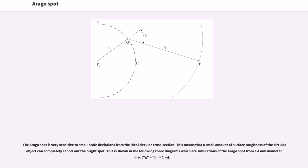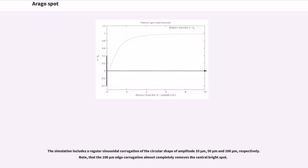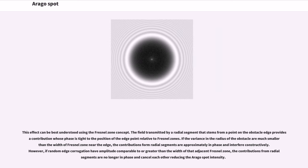This is shown in the following three diagrams, which are simulations of the Arago spot from a 4 mm diameter disc. The simulation includes a regular sinusoidal corrugation of the circular shape of amplitude 10 micrometers, 50 micrometers, and 100 micrometers, respectively. Note that the 100 micrometers edge corrugation almost completely removes the central bright spot.